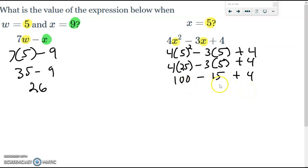Now, to work from left to right, 100 minus 15 plus 4. So, 100 minus 15 is 85. And then plus 4 is 89.